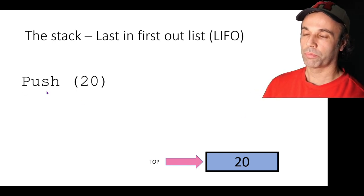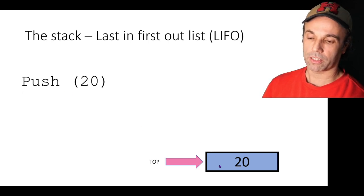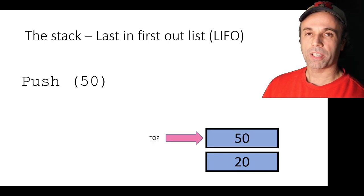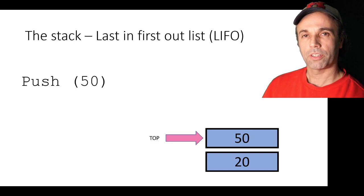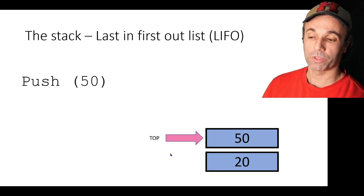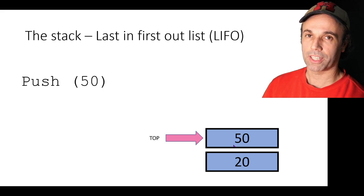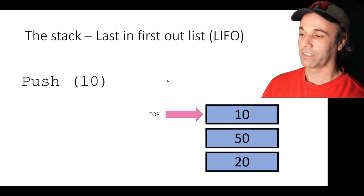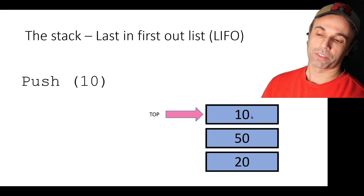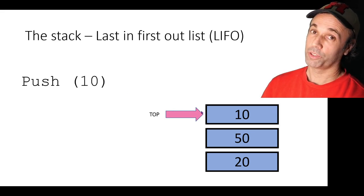We've made a call to the function push. We've passed it the value 20 and we've got one item on the stack which contains the single integer value 20, and the top pointer is pointing at that. We make another call to the function push, this time with the value 50. That item gets put on top of the stack and now the top pointer points to the most recent item. And we do it again, this time with the value 10.